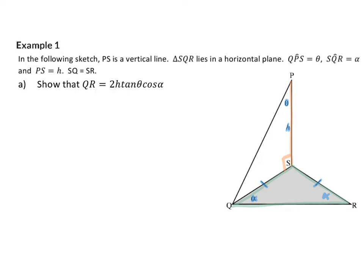In question A, we are asked to show that QR is the same as 2 times H times tan theta cos alpha. Now, this actually implies that we need to calculate QR and it simply gives us the answer we need to end up with. So, side QR is in the bottom triangle SQR, but in this triangle we have no side lengths yet, and that means we will have to start in triangle PQS, where we have side length H, and then calculate the common side QS, so that we can move to our bottom triangle.